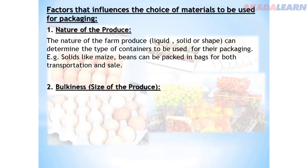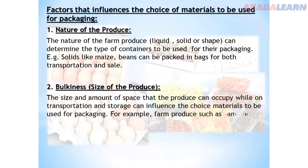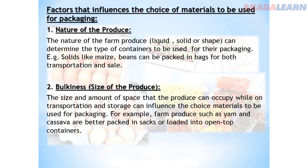Number two: bulkiness or the size of the produce. The size and amount of space that the produce can occupy while in transportation and storage can influence the choice of materials to be used for packaging. For example, farm produce such as yam and cassava are better packed in sacks and loaded into an open-top container for transportation.